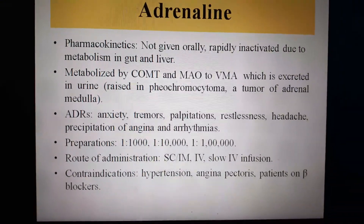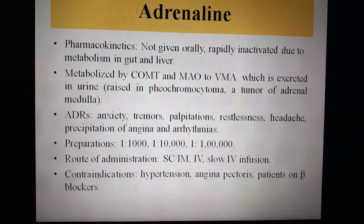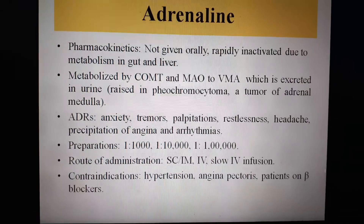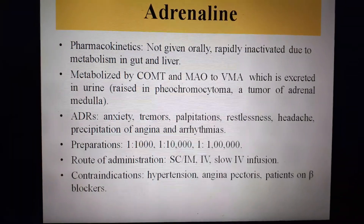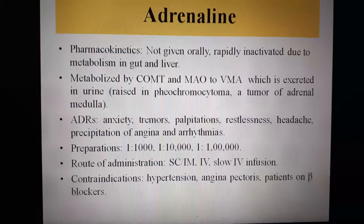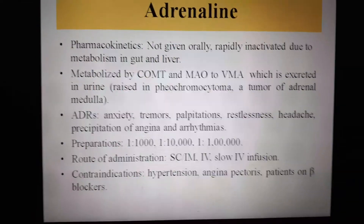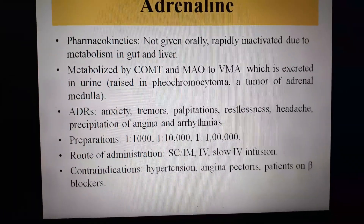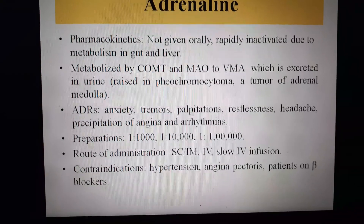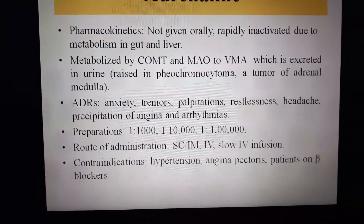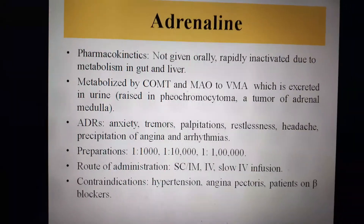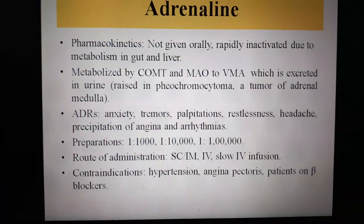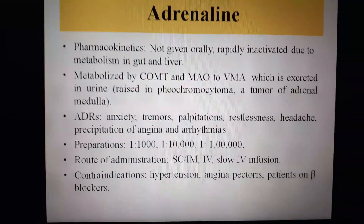Moving to pharmacokinetics: the drug is not given orally, as it is rapidly inactivated by metabolism in the gut and liver. It is metabolized mainly by two enzymes — COMT (catechol-O-methyltransferase) and MAO (monoamine oxidase) — to vanillylmandelic acid (VMA), the metabolic end product, which is excreted in the urine. In pheochromocytoma, a tumor of the adrenal medulla, there are very high levels of catecholamines, leading to elevated urinary VMA, which serves as a diagnostic marker.